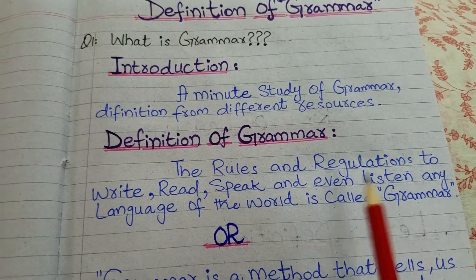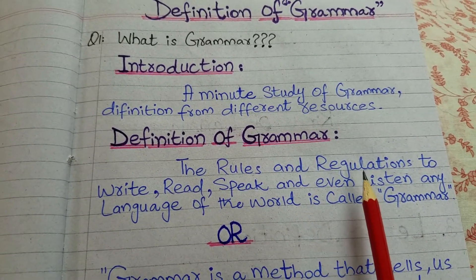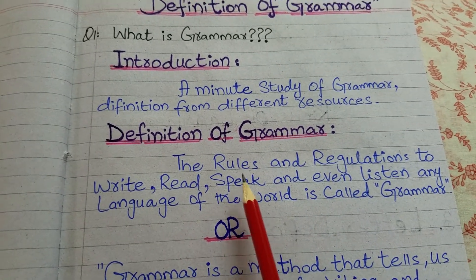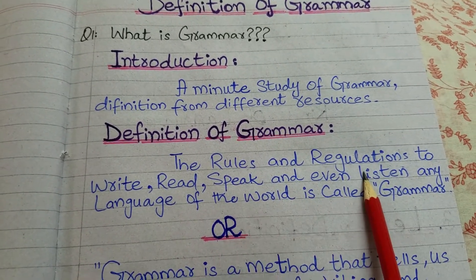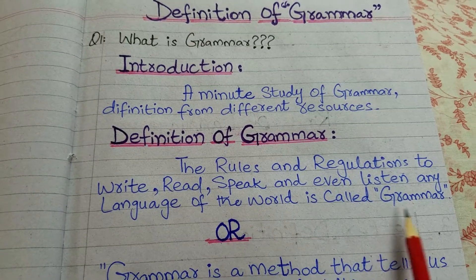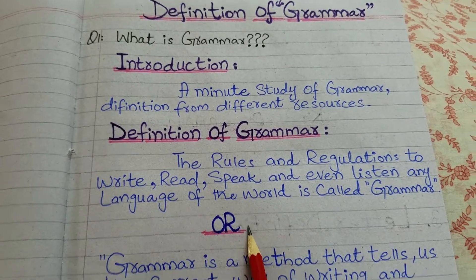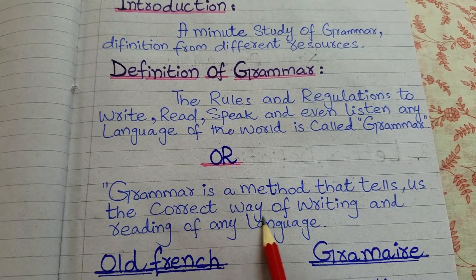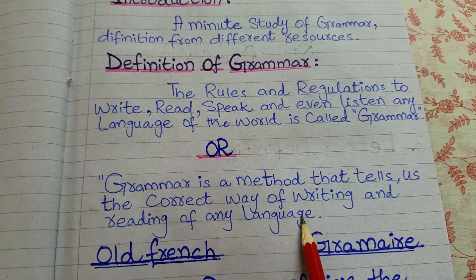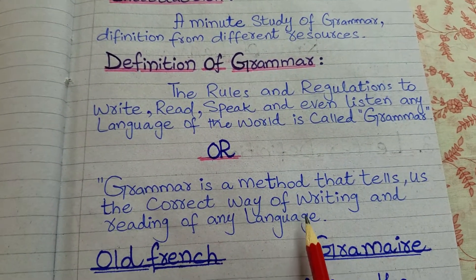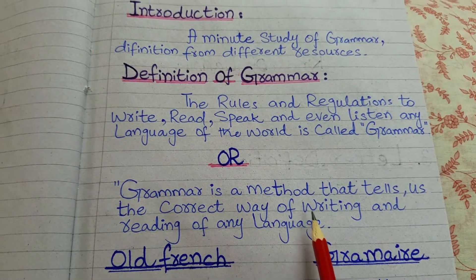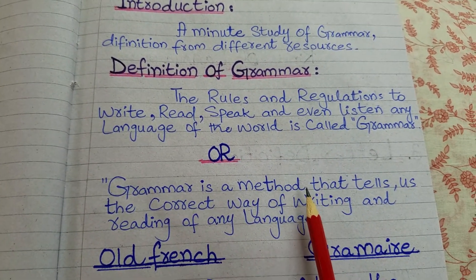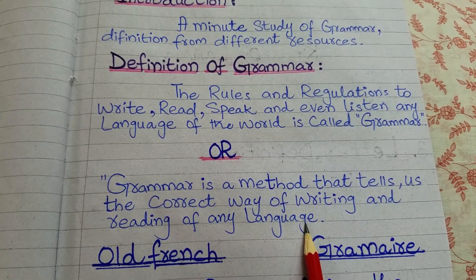Kisi bhi zaban ko likhne, padhne, bolne, aur sunne ke qawanin ya usool ko grammar kehte hain. Grammar is a method that tells us the correct way of writing and reading of any language. Grammar ke woh qawaid-o-usool jo aapko batate hain ki jab aap baat karen ya likhen to lafzon ko kis tarha se tarteeb den.